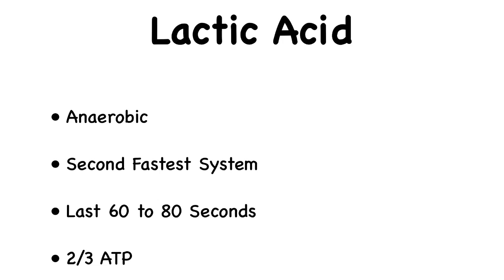The lactic acid system is able to run between 60 and 80 seconds. The amount of ATP produced is also different — the phosphocreatine system creates about one ATP, while the lactic acid system creates two or three.